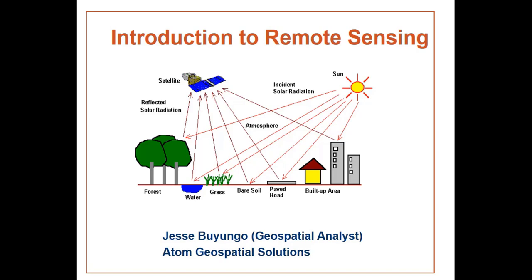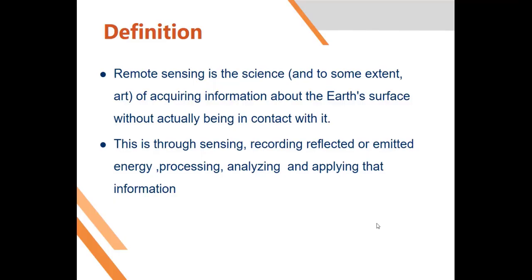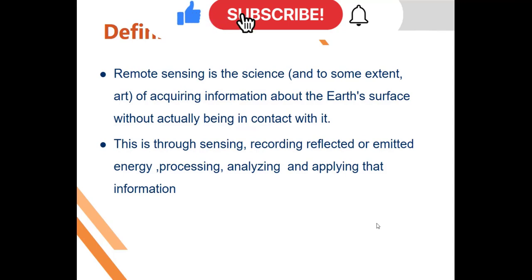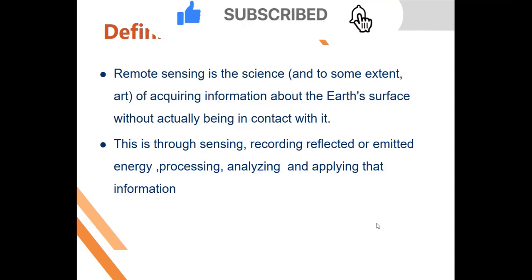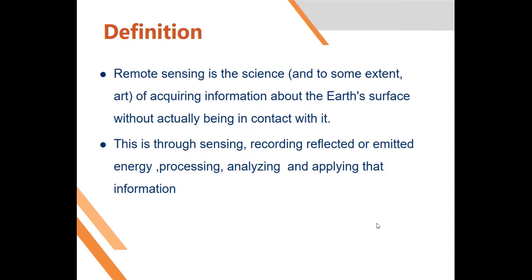So let us begin with the definition of remote sensing. Remote sensing is the science and, to some extent, an art of acquiring information about the earth's surface. It is a science because scientific principles are involved, such as transmission, radiation, absorbance, and reflectance. It is an art because while you are analyzing images, you put in some bit of art — for example, during map making and during choosing colors.